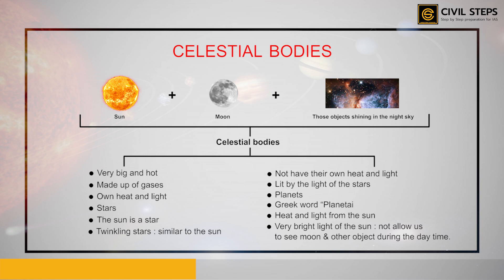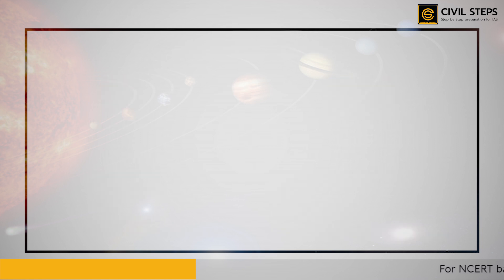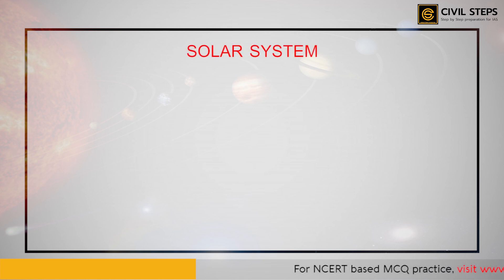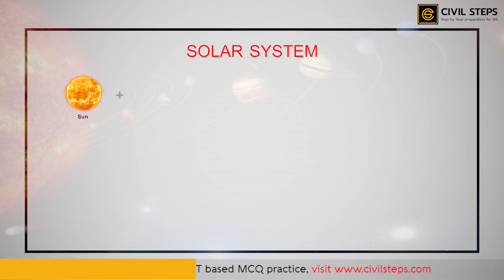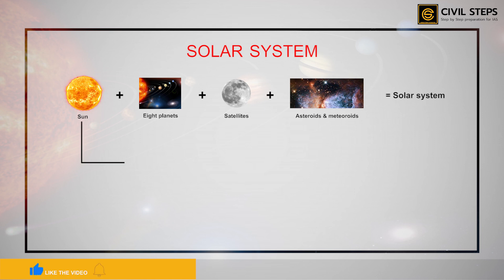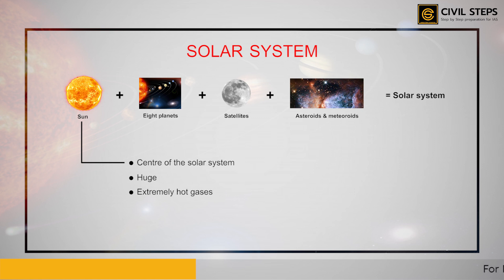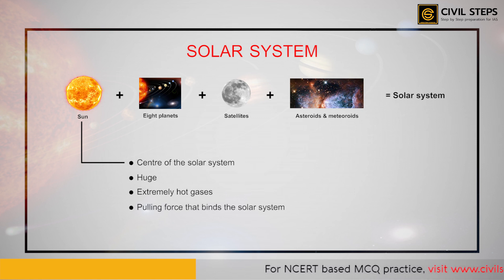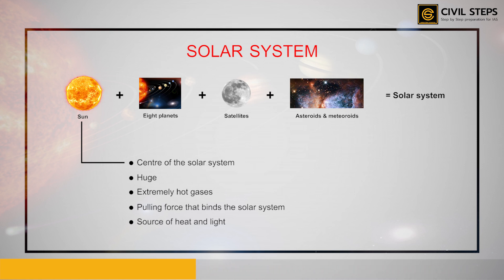Now, after discussing celestial bodies, we shall discuss the solar system. The Sun, the eight planets, the satellites, and some other celestial bodies known as asteroids and meteoroids form the solar system. The center of the solar system is the Sun, which is huge and made up of extremely hot gases. It provides the pulling force that binds the entire solar system. The Sun is considered to be the ultimate source of heat and light for the solar system.